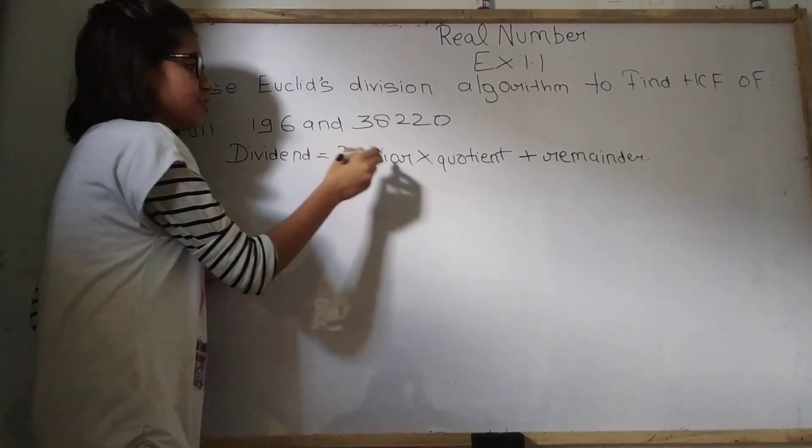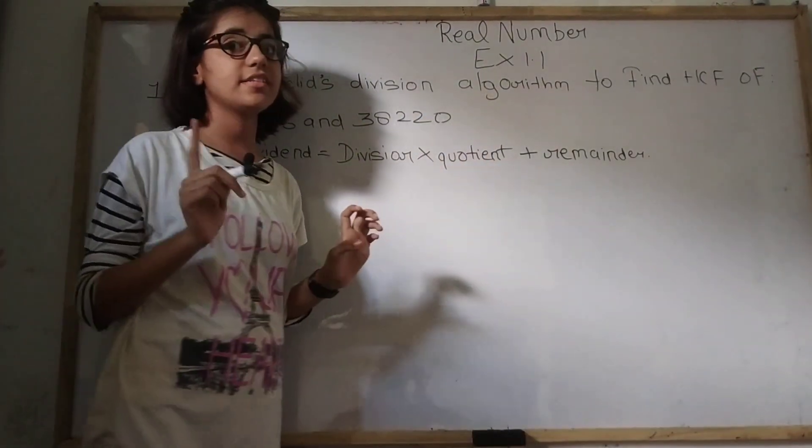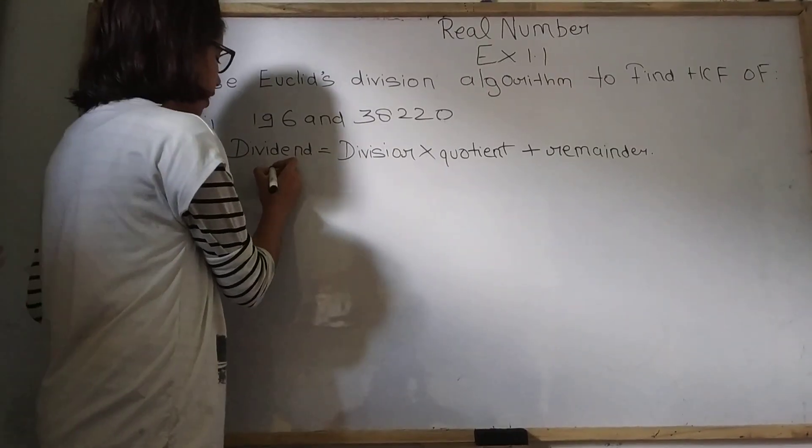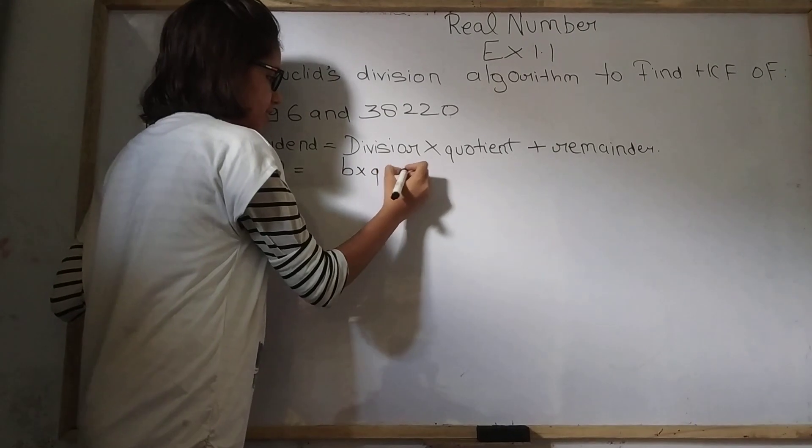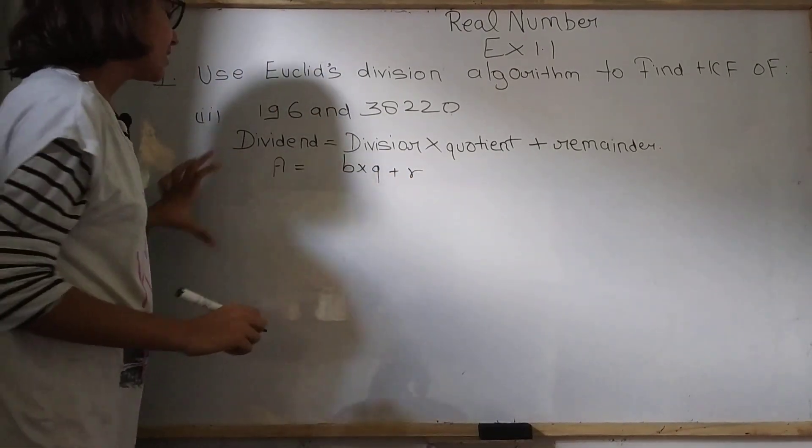So let's start and this dividend equals to divisor into quotient plus remainder is our equation. To which we can also write A equals to B into Q plus R. So now let's start solving.